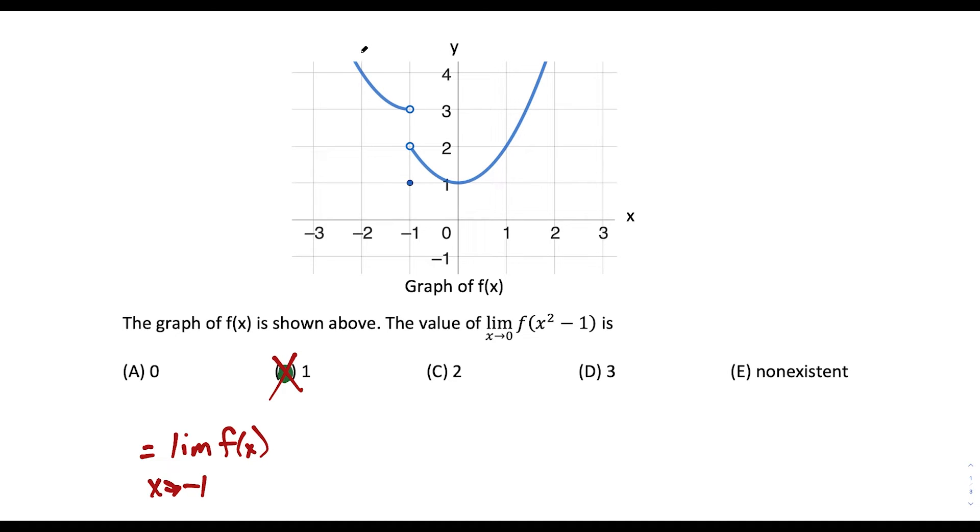And when they look at the graph here, they say, on the left side, I'm heading up to 3. On the right side, I'm heading up to 2. So since my left and right limits are not equal to each other at negative 1, that means our limit is non-existent. So choice E.